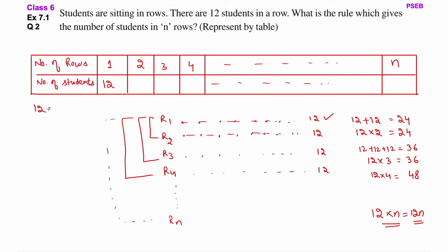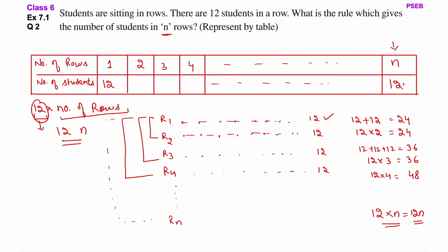Generic rule kaisa ayega? 12 multiply by number of rows. Kyunki 1 row mein 12 hi students baithenge — yeh number toh fixed hai, aap kuch nahi kar sakte. Yeh wala number vary hoga — number of rows toh vary hoti jayegi. Number of rows can be 2, 3, 4, or any number. Isi liye number of rows ki jagah par variable n ka use karoge, jo question mein given diya hua hai. 12 toh fixed number hai — so yahaan par ayega 12n.